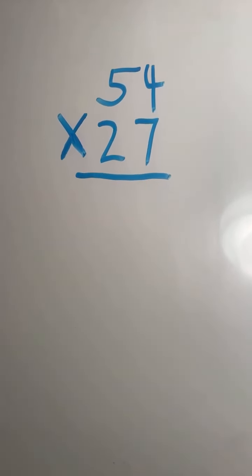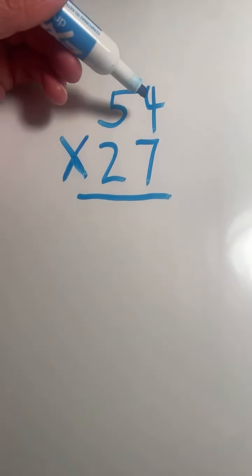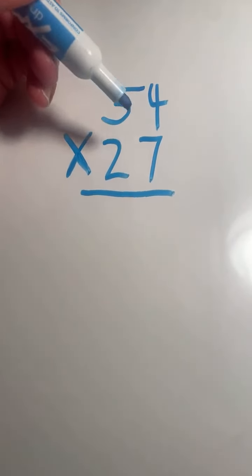54 times 27. So we always start out in the ones place. We're going to start out by multiplying 4 times 7. 4 times 7 equals 28.